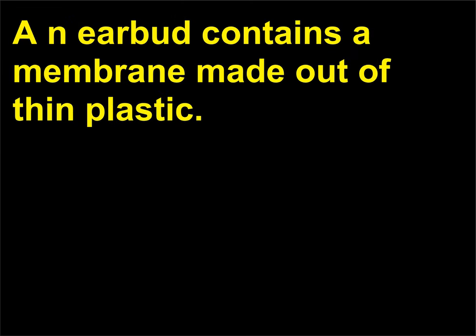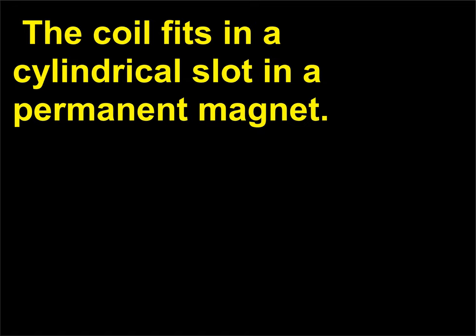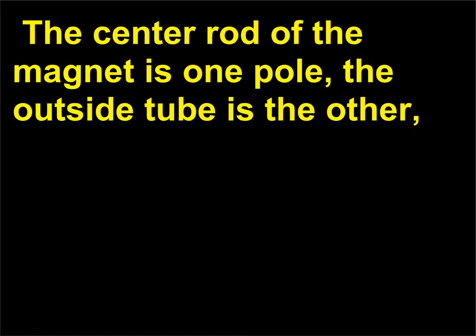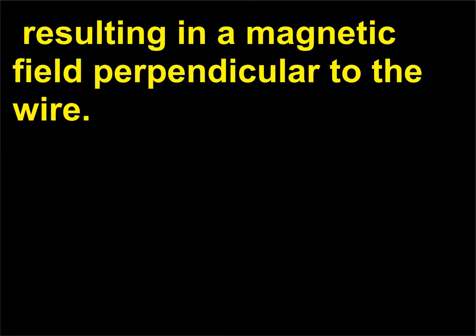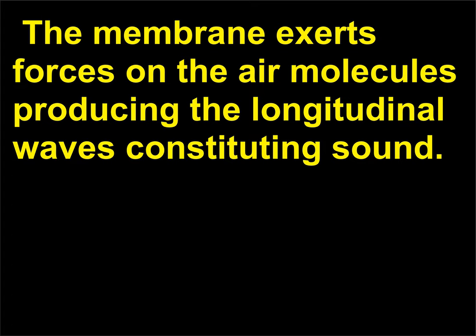How do earbuds use the results of electromagnetism? An earbud contains a membrane made out of thin plastic. In the center of the membrane is a coil of wire called the voice coil. The coil fits in a cylindrical slot in a permanent magnet. The center rod of the magnet is one pole, the outside tube is the other, resulting in a magnetic field perpendicular to the wire. When there is a current through the wire the Lorentz force on the wire pushes the membrane in and out. The membrane exerts forces on the air molecules producing the longitudinal waves constituting sound.